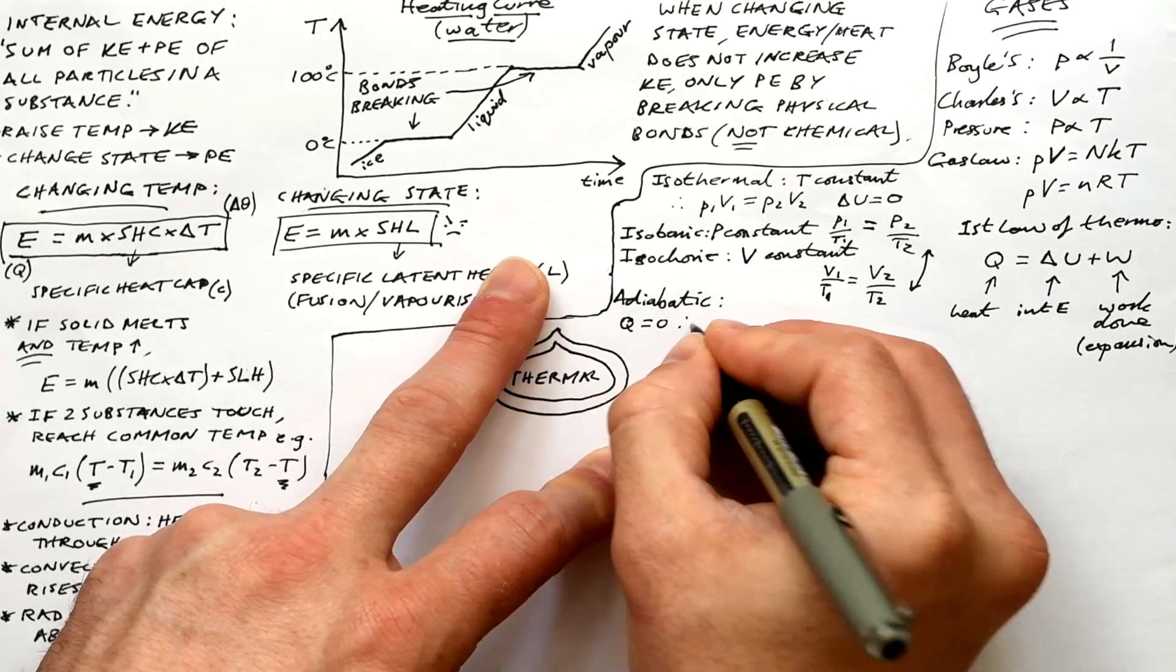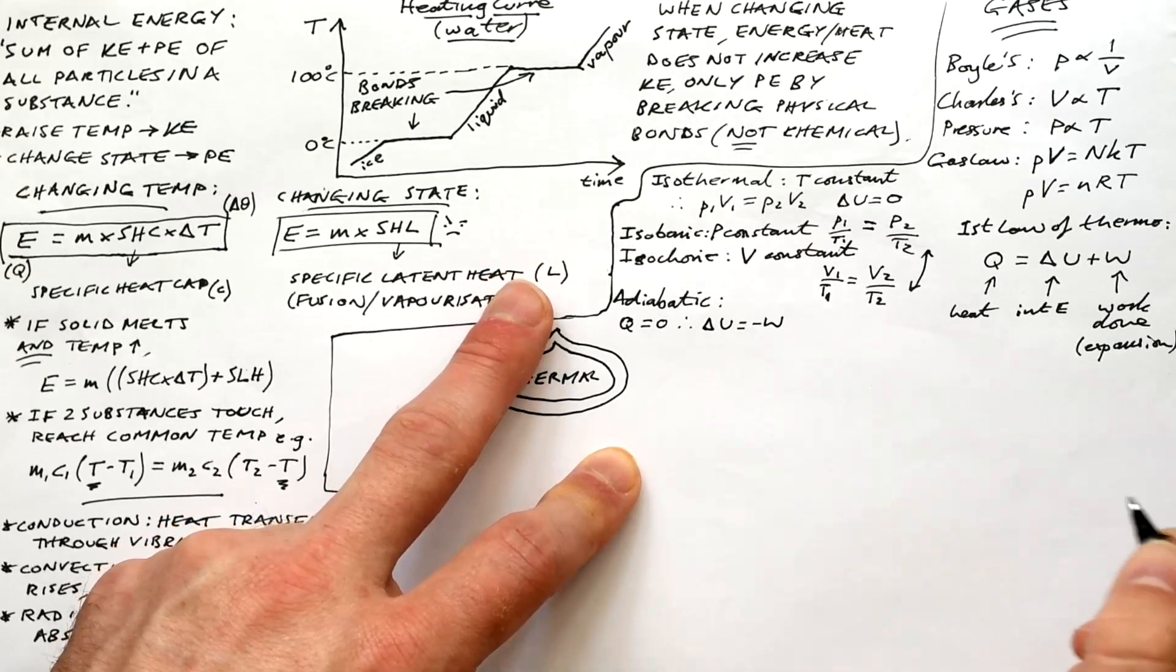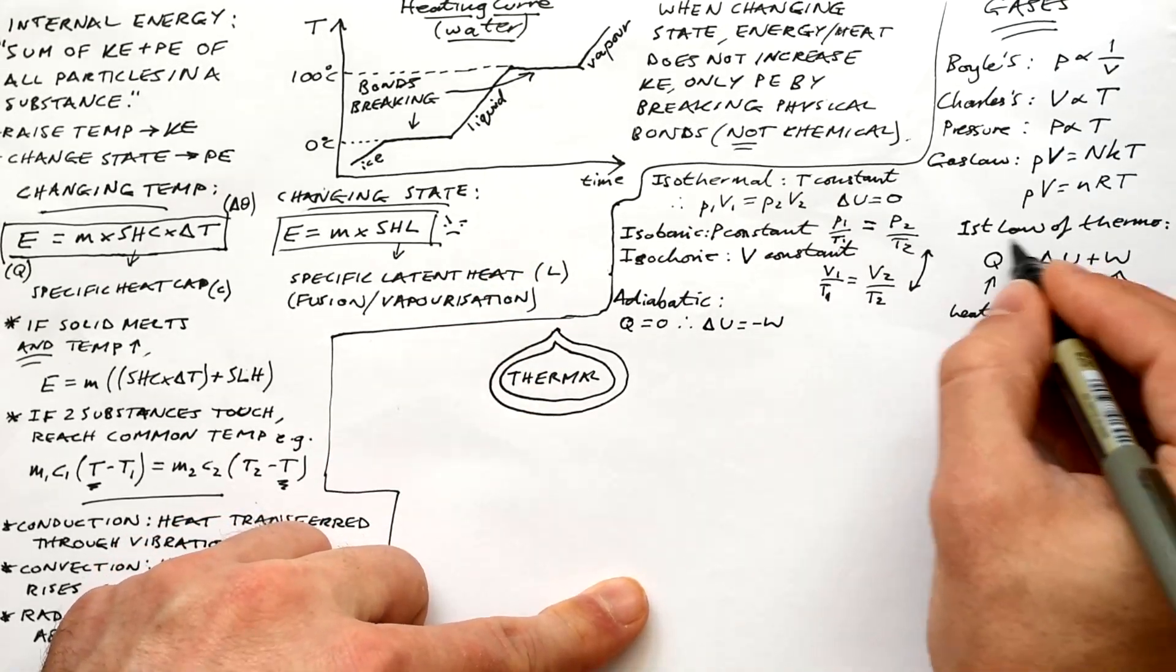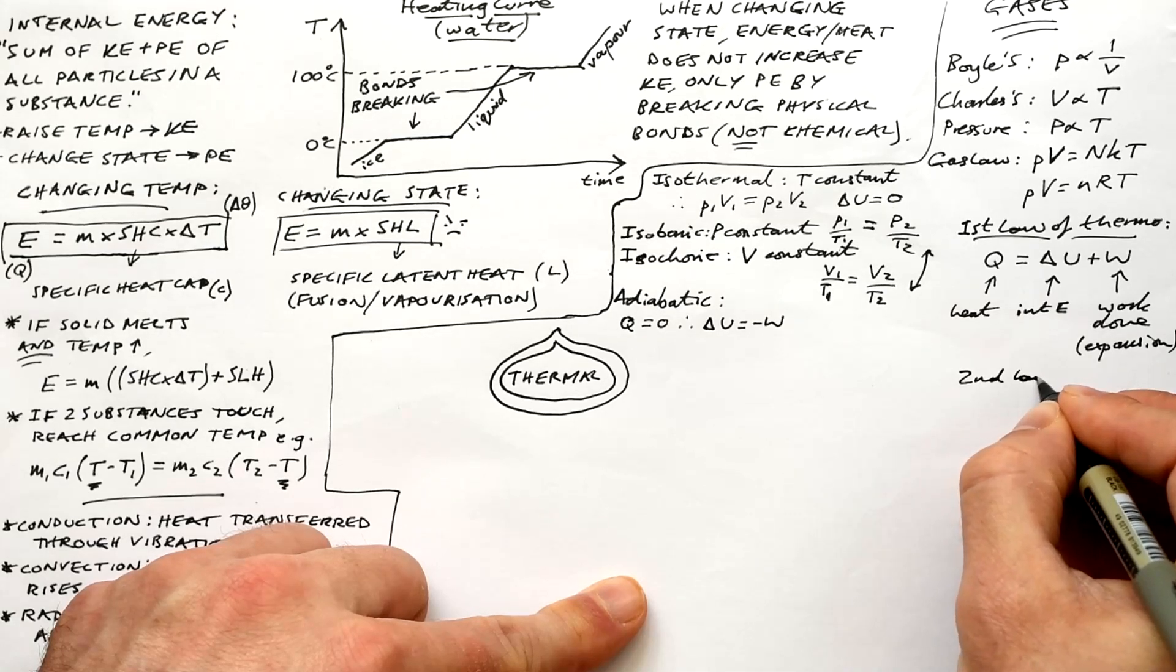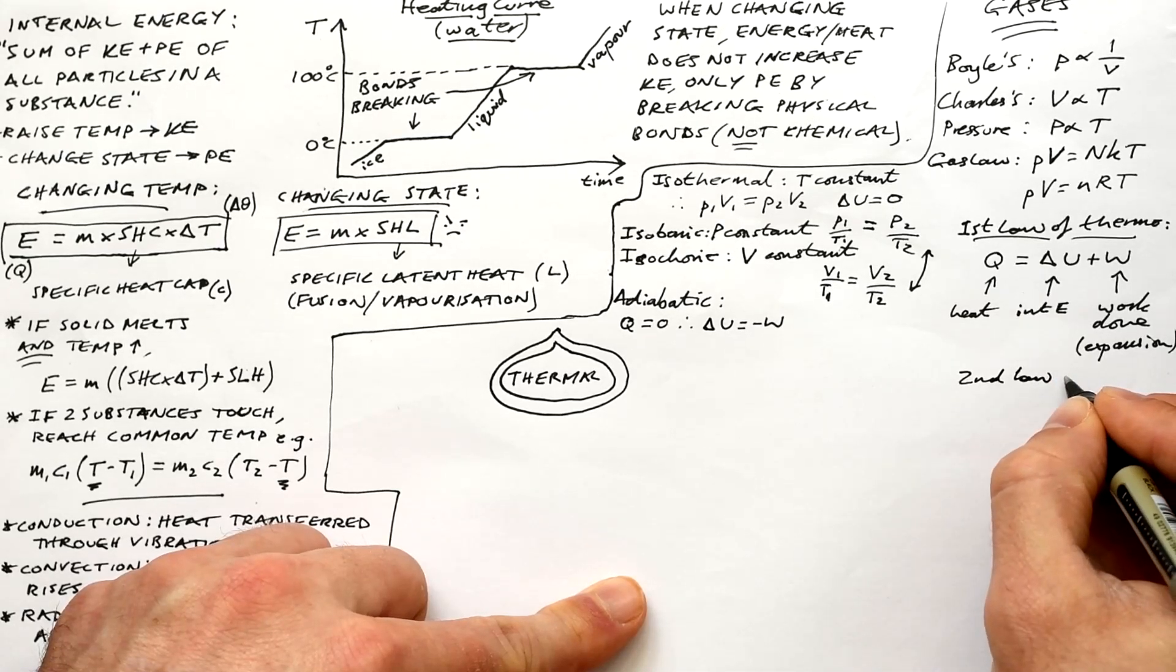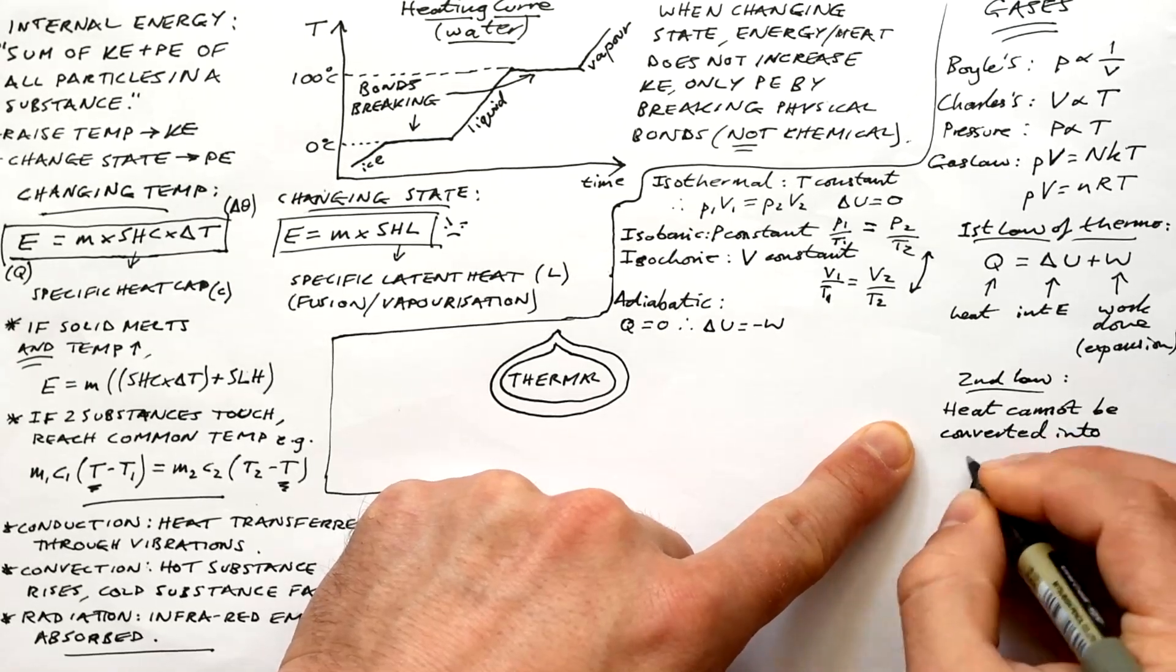And we have adiabatic. Adiabatic is when there is no heat in or out of a system. So Q is equal to zero. So that means delta U is equal to minus W. It's not PV is constant this time, but it's PV to the power of gamma. Gamma being the adiabatic constant. You'll always be given that. You'll never have to remember those.